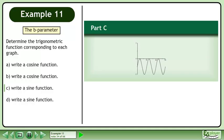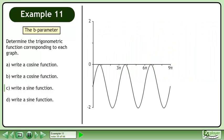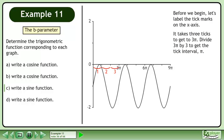In part C, write a sine function for the graph shown. Before we begin, let's label the tick marks on the x-axis. It takes 3 ticks to get to 3 pi. Divide 3 pi by 3 to get the tick interval: pi. Label the ticks.